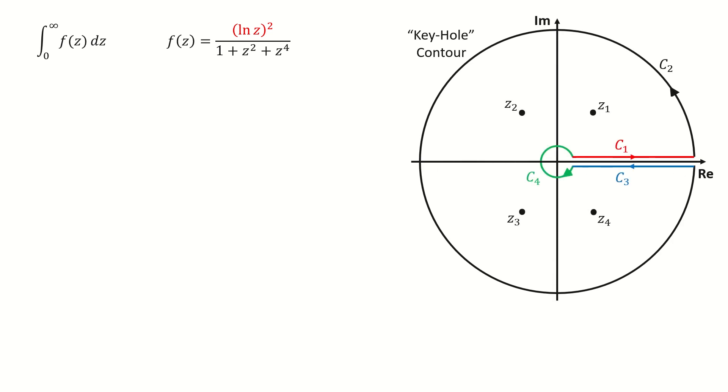So first, let's draw the contour here. And this contour includes four parts, c1, c2, c3, and c4. From Cauchy Residue theorem, we know the integral on the entire contour equals to 2πi times the sum of the residues. And next, we will calculate the integral on the four parts of this contour.